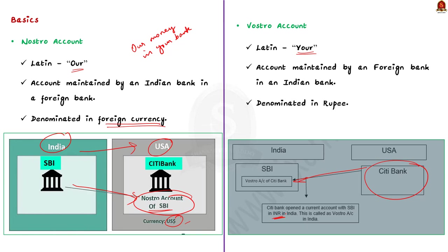These two Nostro and Vostro accounts, when performing in tandem, will enable the rupee-ruble agreement. The most important point to note is that the Nostro and Vostro mechanisms will perform well only if the countries involved have a balance of trade between them.